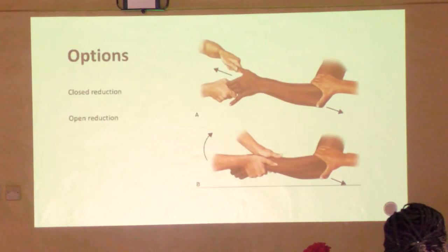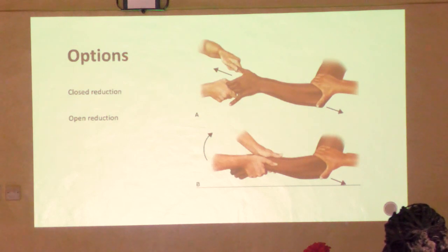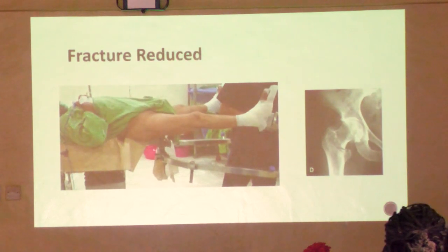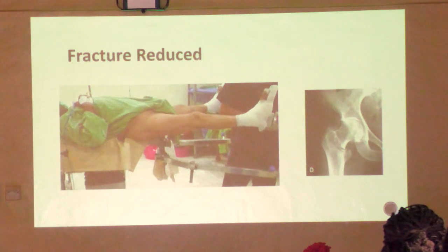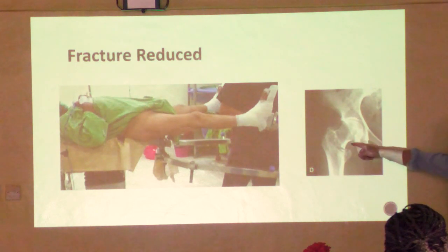The options are we need to reduce the fracture - either closed, without doing an operation, or open with an operation. This is a typical manipulation of a wrist fracture. Here's our hip fracture on the traction table: traction is being applied, posts between the legs, feet strapped to the table, the leg being pulled, and you can see that our fracture has been beautifully reduced. Shenton's line was recreated - you can still see the fracture line, but it's very nicely reduced.